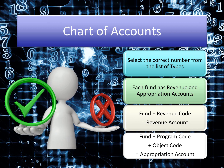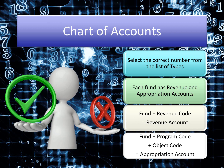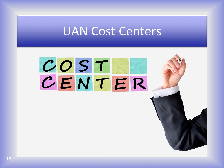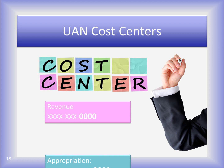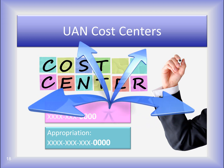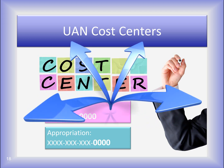When absolutely necessary, UAN users can add another layer to this structure. A cost center is a UAN enhancement that consists of a four-digit number at the end of a revenue or appropriation account, and it's used to subdivide account codes. Cost center numbers and their names are user defined — you create them at your entity. An entity such as a library, cemetery, or fire department may want to track finances separately for different locations. Adding a cost center for each of the locations would allow revenue and appropriation accounts to be designated by location.